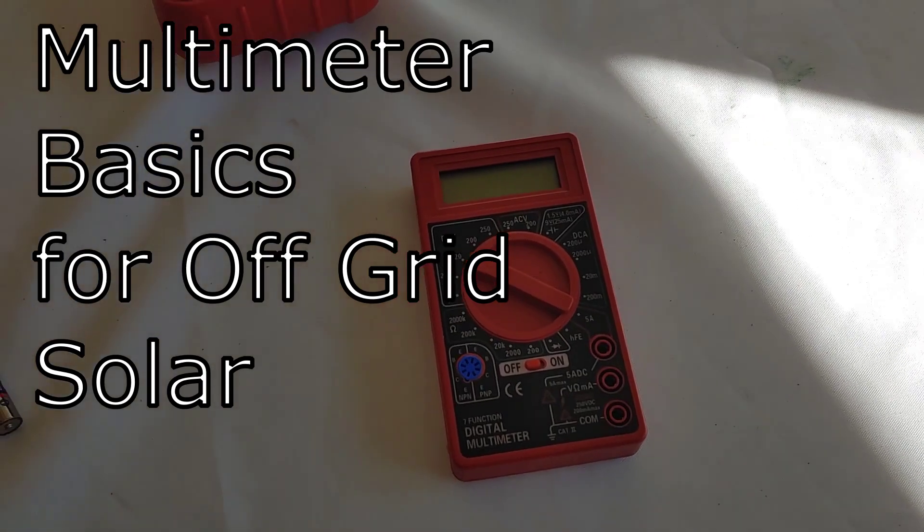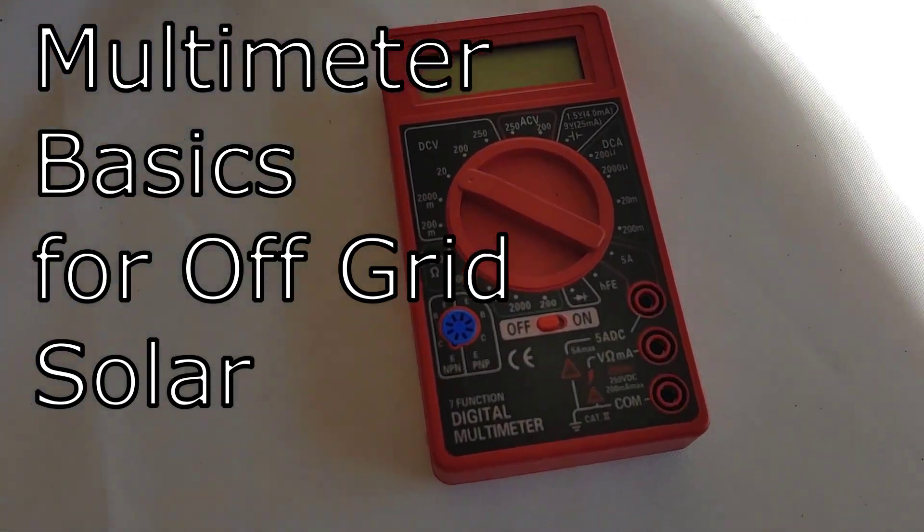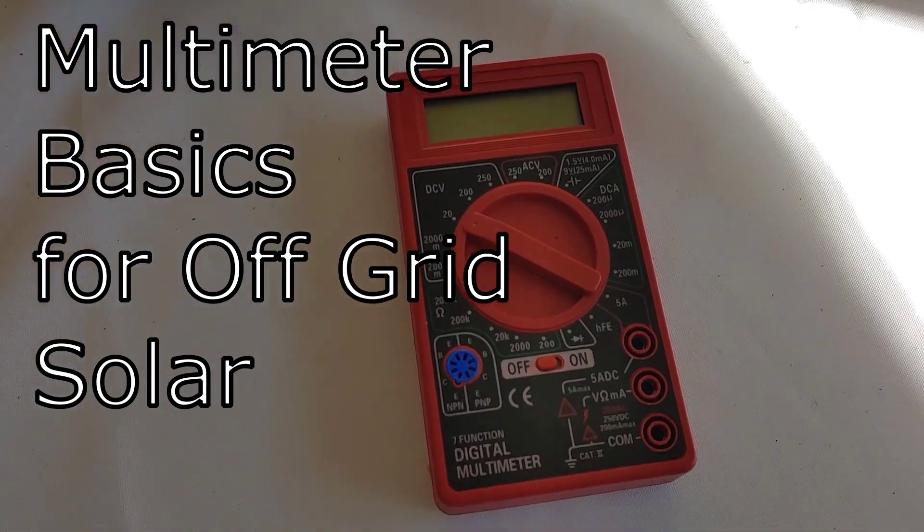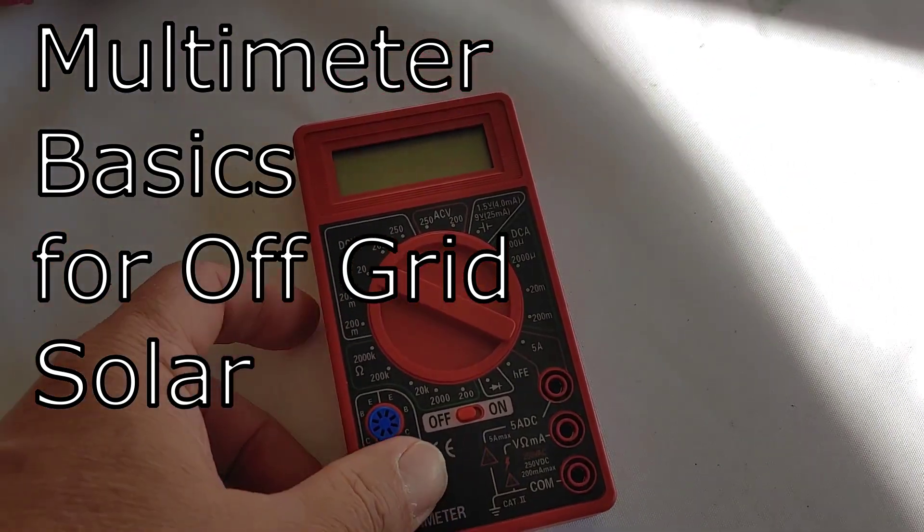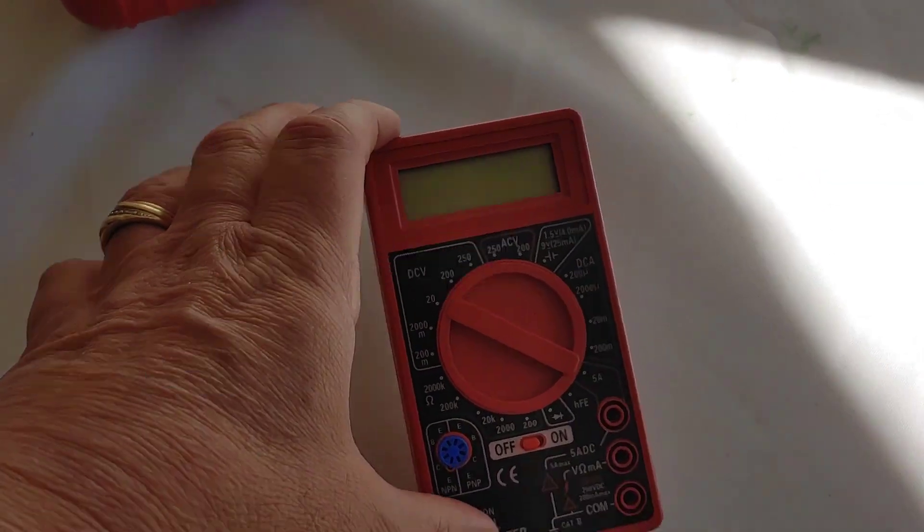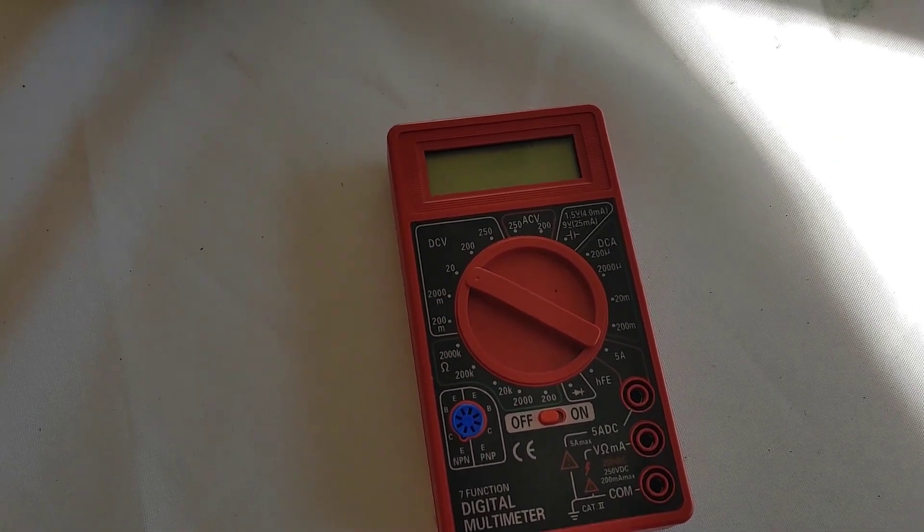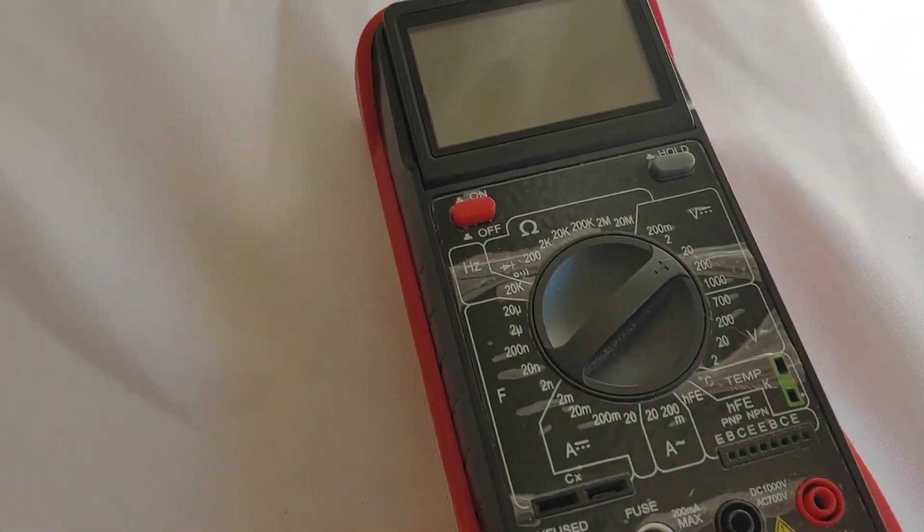Hello all, Shoestring here. Today we're going to talk about the basic functions of a multimeter, but we're only going to be discussing the multimeter as it applies to checking for voltage when it comes to solar applications.